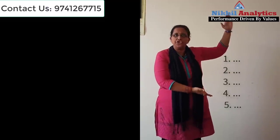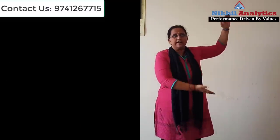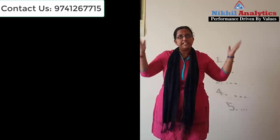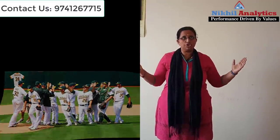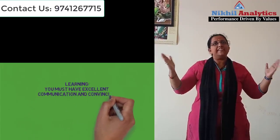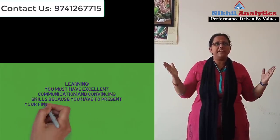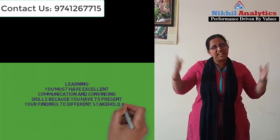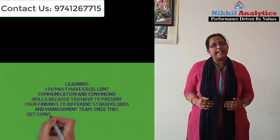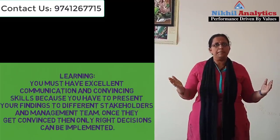Seventh component: communication by Peter Brand to Billy Beane. Peter Brand was excellent at communicating his findings to GM Billy Beane, which is why all of his recommendations were easily accepted. Billy then communicated these to different stakeholders, got new players recruited and coached. Learning: you must have excellent communication and convincing skills, because you have to present your findings to different stakeholders and the management team. Only once they are convinced can the right decisions be implemented.